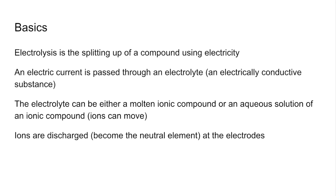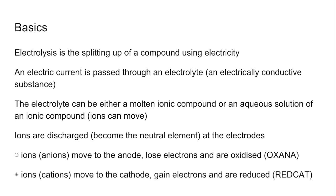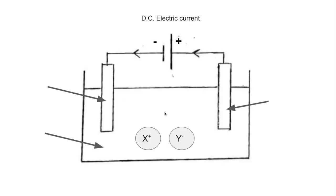The ions go to the electrodes and become the neutral element — they become discharged, they lose their charge. The negative ions, also known as anions, move to the anode and lose electrons, so they're oxidised. The way I remember that is 'Oxana' — oxidation at the anode. The positive ions, called cations, move to the cathode and get reduced because they gain electrons. The way I remember that is 'Red Cat.'